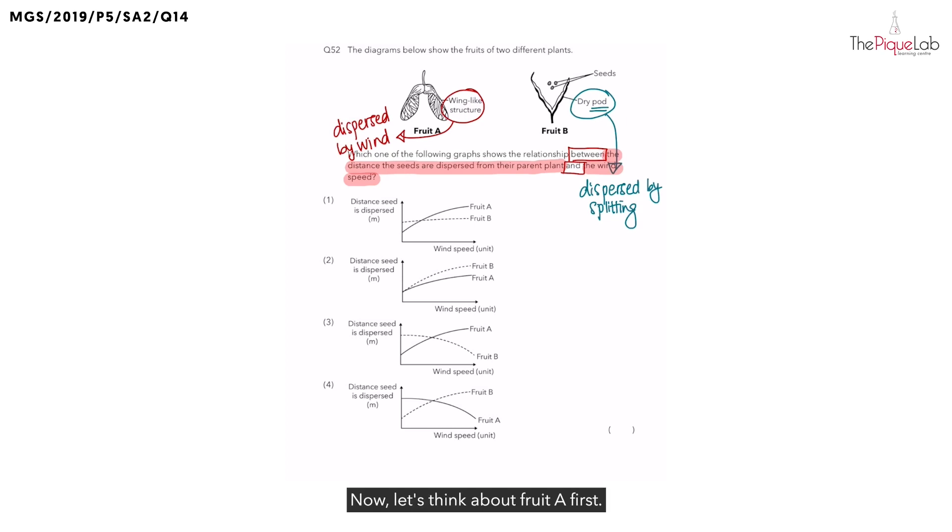Now let's think about fruit A first. What happens to the distance the seed is dispersed when the wind speed increases? Let's write it down over here. When wind speed increases, do you think the distance the seed is dispersed will be affected? Yes, if the seeds are dispersed by wind, when there's a stronger wind blowing, the seeds will be dispersed a further or shorter distance?